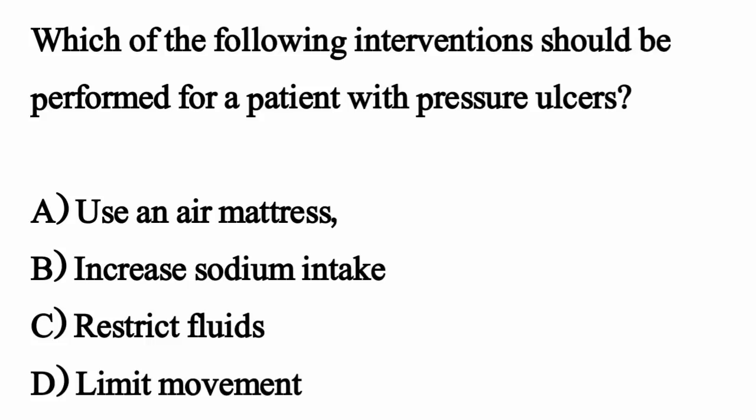Which of the following interventions should be performed for a patient with a pressure ulcer? The correct option is Option A, use an air mattress.